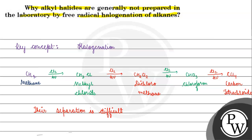For instance, if we only need DCM (dichloromethane), the reaction also produces other polyhalogenated derivatives alongside it. We cannot easily remove those byproducts, making it impractical to obtain a pure single product.